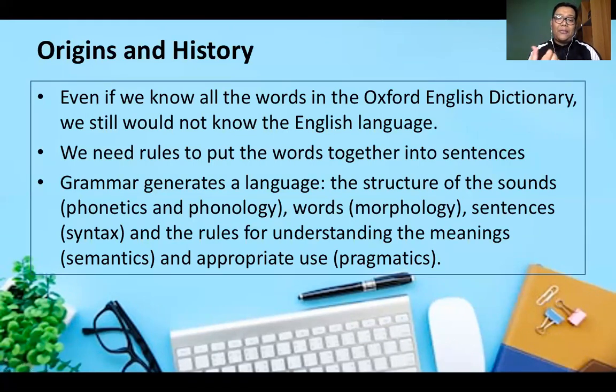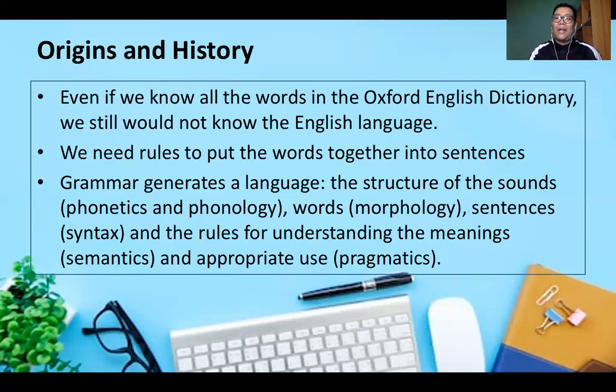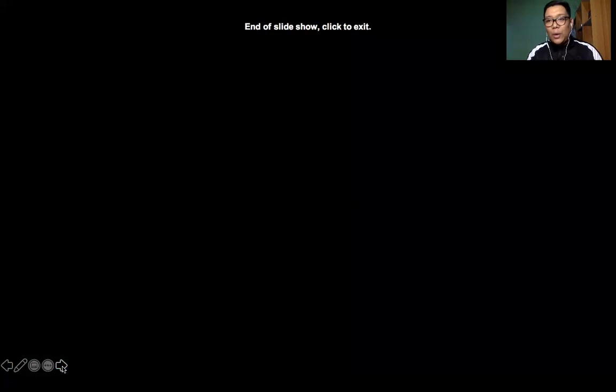We also need rules to put words together into sentences — that is grammar. Grammar generates language. The structure of sounds involves phonetics and phonology; words involve morphology; sentences involve syntax; meaning involves semantics; and appropriate use involves pragmatics. Understanding the history of the English language helps us understand its different linguistic features — for example, why a syllable sounds a certain way and why tracing back to how English began matters. Thank you very much.